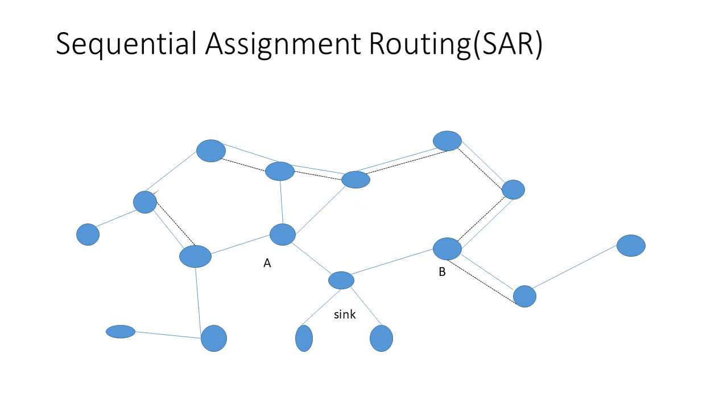To avoid single route failure, a multipath with a tree rooted at source sensor node to destination sensor node coupled with localized path restoration scheme is employed. For each sensor node, two metrics are associated with each path: one is delay and the second is energy usage for routing on that path.